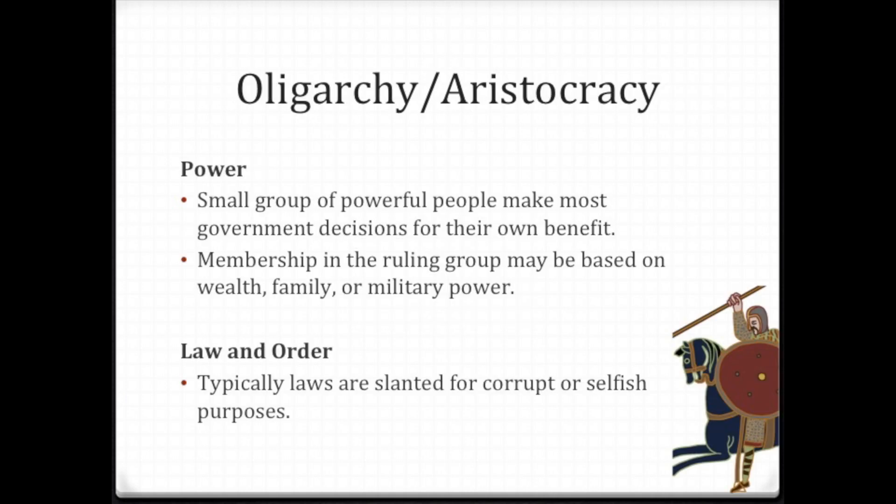Our last form of government is an oligarchy or aristocracy, where a small group of powerful people make most government decisions for their own benefit. Membership in the ruling party can be based on wealth, family, or military power. From 1948 to 1994, official policy in South Africa gave white people all the political power, even though the majority of South Africans were Black, and non-whites could not influence government.